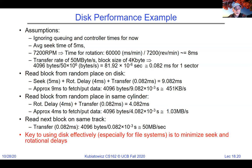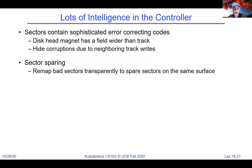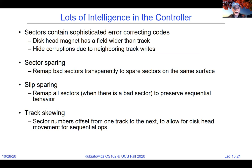There is a lot of intelligence in the controller. Sectors have sophisticated error correction — far more bits on the sector than you're actually writing, including an error correction code. We can do sector sparing, which transparently uses a spare sector elsewhere on the disk when a bad sector is detected. We can do slip sparing, remapping a whole bunch of sectors to a completely different track if there's a problem. We can skew tracks so sector numbers are offset from one track to another. All of this is done by the controller. Although we'll talk about file system optimizations for physical head location, there is already a lot of intelligence in modern controllers that competes with you.